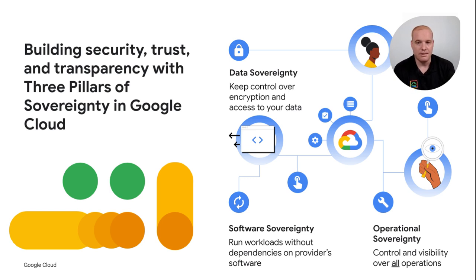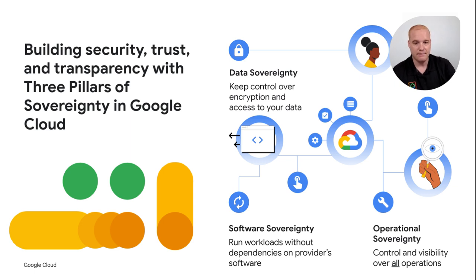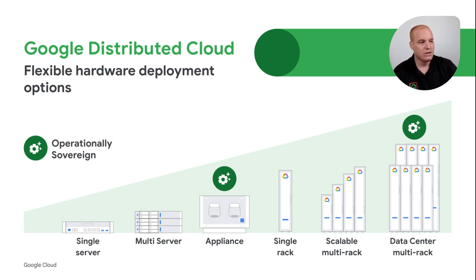Google Distributed Cloud builds on the three pillars of sovereignty. Data sovereignty means that the hardware, software, and data remains on your premises. Software sovereignty means GDC embraces open models, such as Kubernetes and Anthos. Operational sovereignty means you have a cloud in the box that can be run on your premises, operated by your personnel, with no connection to Google or the internet at any time. Not all customers can use public clouds due to compliance regulations, intermittent connectivity, bandwidth limitations, latency, and speed. Google Distributed Cloud offers a cloud-in-the-box experience.